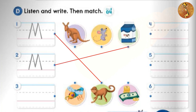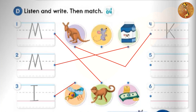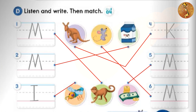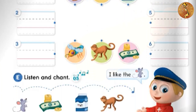3. Insect, insect. 4. Kangaroo, kangaroo. 5. Money, money. 6. Mouse, mouse. Page 45.